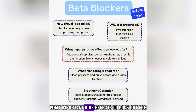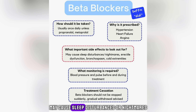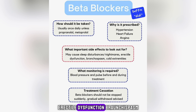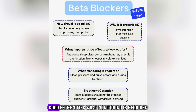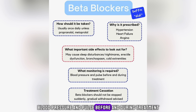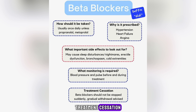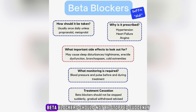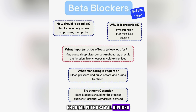What important side effects to look out for? May cause sleep disturbances or nightmares, erectile dysfunction, bronchospasm, and cold extremities. What monitoring is required? Blood pressure and pulse before and during treatment. Treatment cessation: beta-blockers should not be stopped suddenly; gradual withdrawal is advised.